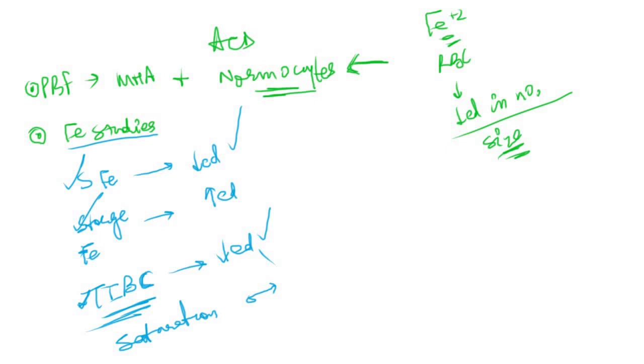This is all about the anemia of chronic disease. In my next video I will talk about thalassemias, which are the last cause of microcytic hypochromic anemias.